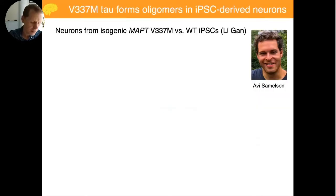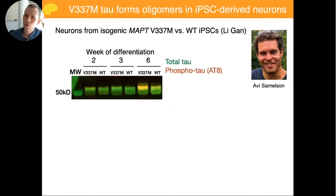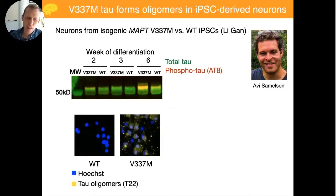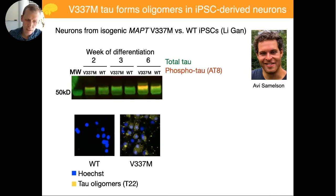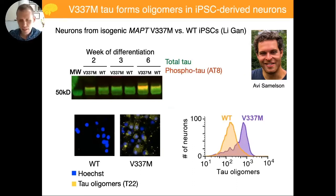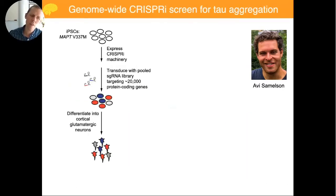For this, postdoc Avi Samuelson investigated isogenic cell lines with a disease mutation in tau versus wild type. He found that the disease neurons accumulate a phosphorylated form of tau also found in Alzheimer's brains, and using conformation-specific antibodies for tau aggregates — early-stage aggregates called oligomers — he found that mutant neurons accumulate these very early on, as early as two weeks, but wild-type neurons don't. He can also monitor these levels of tau oligomers by flow cytometry — mutant neurons shifted to higher levels of tau oligomers.